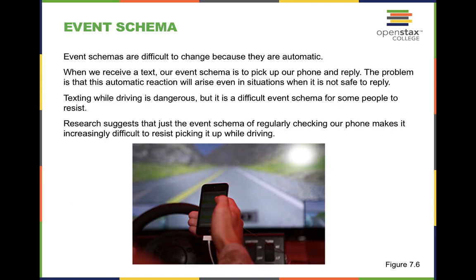Some event schemas are hard to break because once they're established in our brain, they're not easily changed. For a lot of us, whenever we get a notification on our phone — feel it buzz or hear the ding — we have an automatic impulse to check it immediately. That's why when we're driving, it's harder to resist checking a text, even though texting and driving is dangerous and potentially illegal. Because we regularly have that impulse, it can be hard to break even when we know we shouldn't.